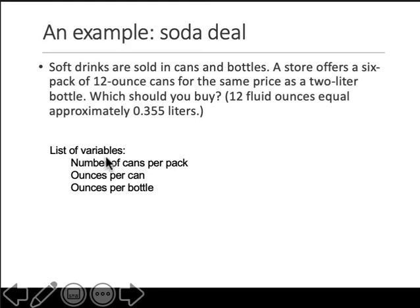Now that we know the variables we want, what are the types of these variables? Whenever we talk about variable types, we talk about numbers, decimals, or characters. For example, first name is a variable — my name is Zaki, Z-A-K-I, so those are characters and the variable is 'first name'.